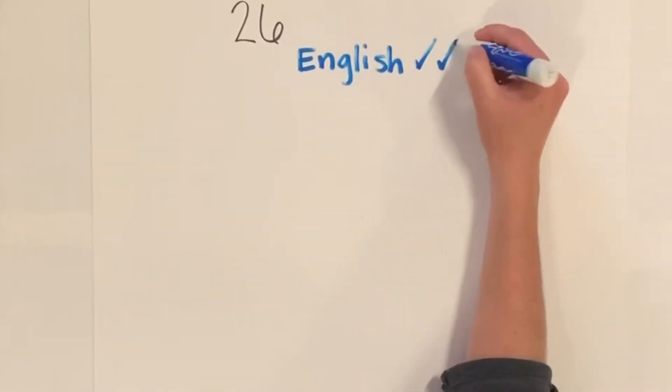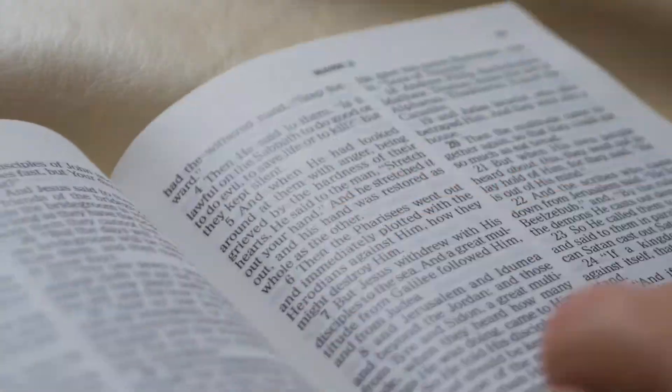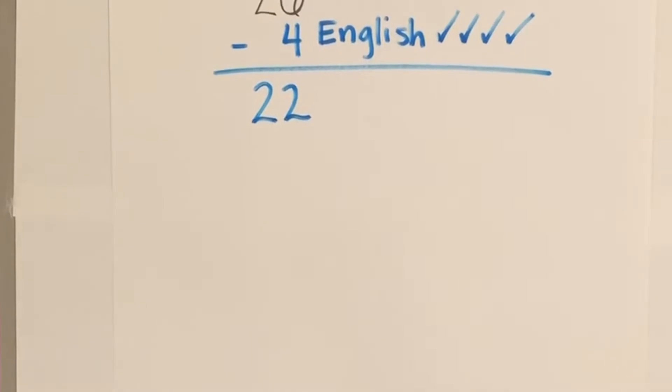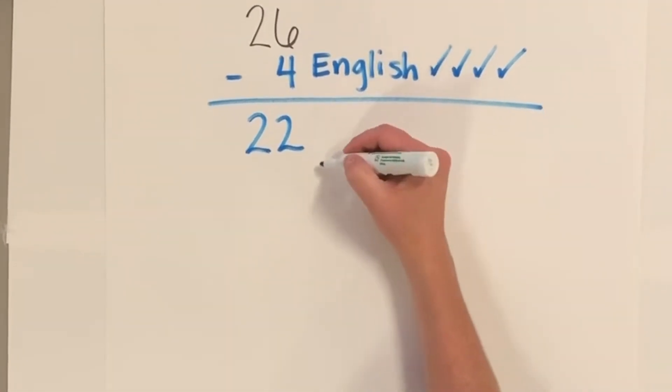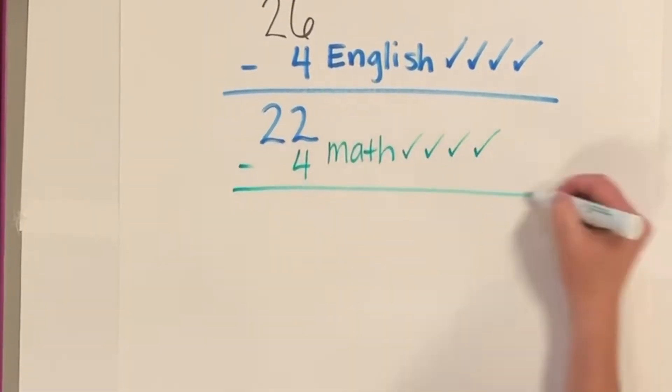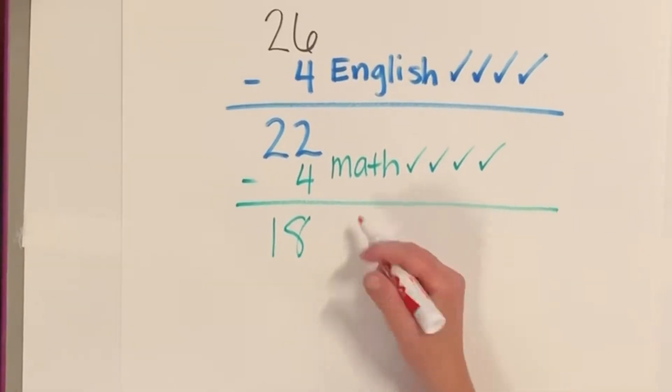You're required to take 4 years of English. That gets you down to 22 credits needed. You're also required to take 4 years of math.